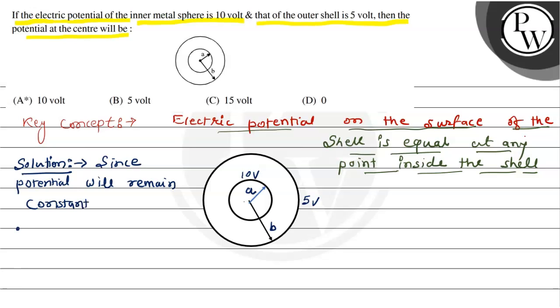therefore, the potential at the center of the shell will be equal to 10 volt.